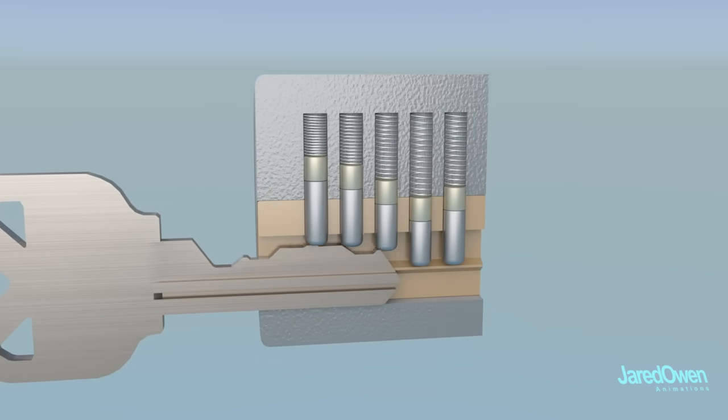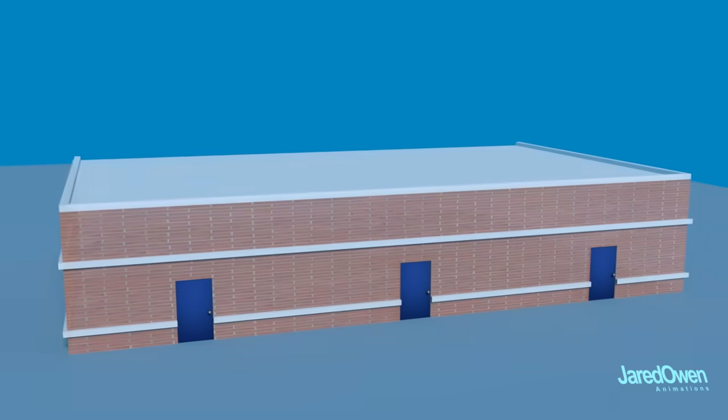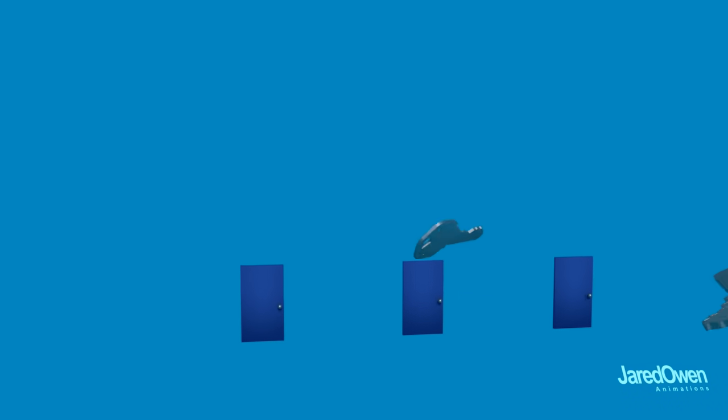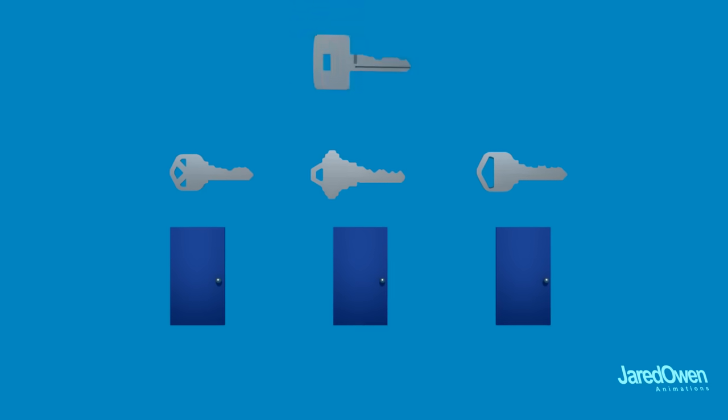So we've covered the case of one key for one lock. There's another case. Let's say there's a building where there's a different key for each door, but there's also a key that opens every single door in the building. This is called a master key.